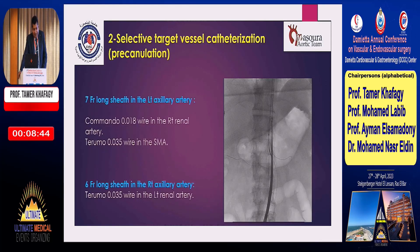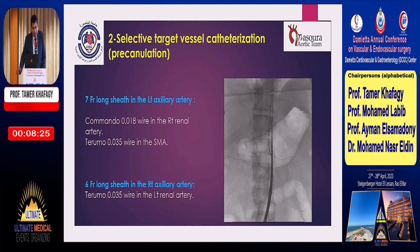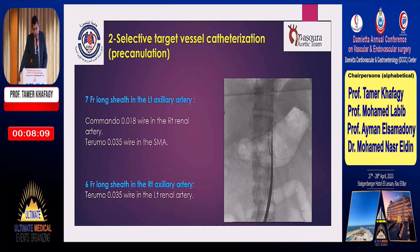We perform selective target vessel catheterization from the left and right upper limb sheaths. This pre-cannulation marks the branch vessels: through the 7 French left axillary sheath, we place a Commando 0.18 wire in the right renal artery and a Terumo 0.035 wire in the SMA. Through the 6 French right axillary sheath, we place a Terumo 0.035 wire in the left renal artery.